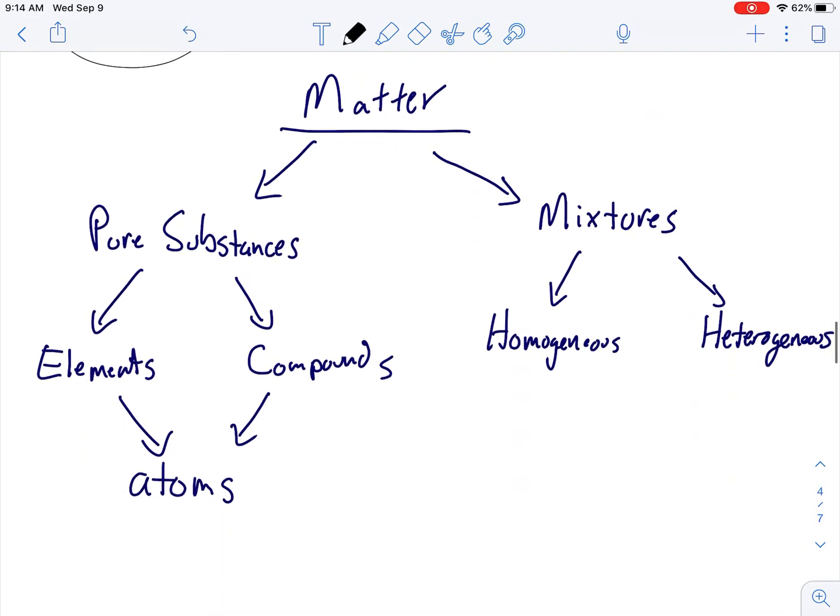Here's a little concept map on how to classify matter. So, here we have matter at the top. Our first separation could be pure substances and mixtures. If it's a pure substance, those are either elements or compounds. And then, elements and compounds are made up of atoms. On the other side, we have mixtures. Mixtures can either be homogeneous or heterogeneous. And it's also important to note that these are also made up of atoms.